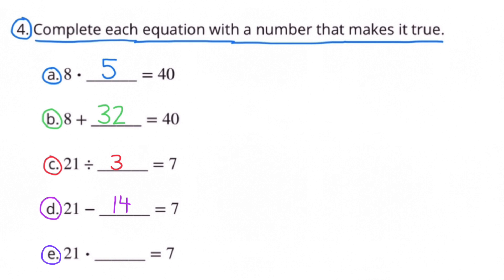E: 21 times what number equals 7? 21 times one-third equals 7.